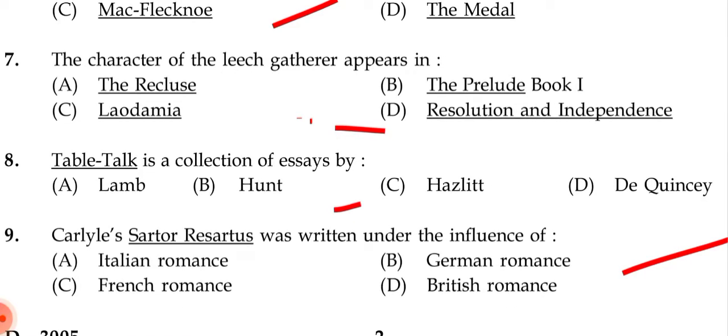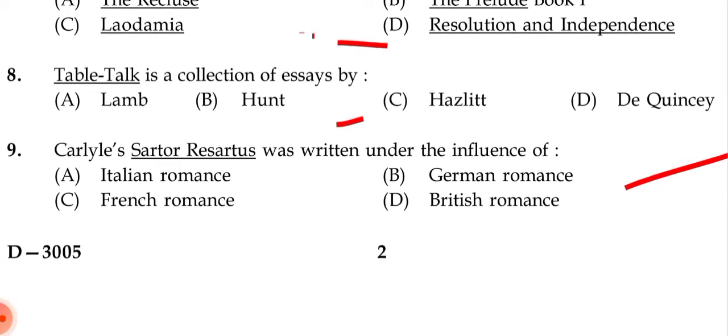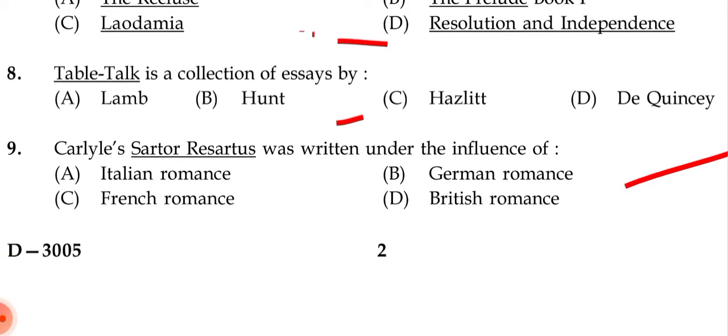Next question: 'Table Talk' is a collection of essays by — (a) Lamb, (b) Hunt, (c) Hazlitt, (d) De Quincey. The correct answer is (c) Hazlitt — his full name was William Hazlitt.